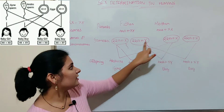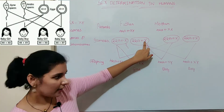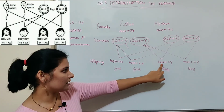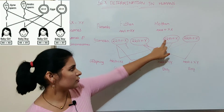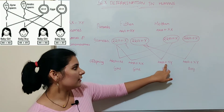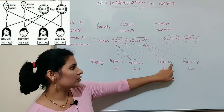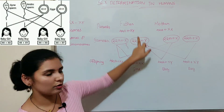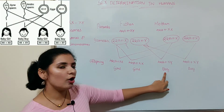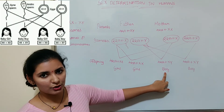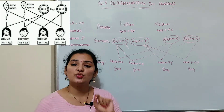In the other case, if the same egg carrying the X chromosome fertilizes with a sperm carrying the Y chromosome, then it produces 44 autosomes plus XY. XY means a male individual, so this zygote develops into a boy child or male individual.